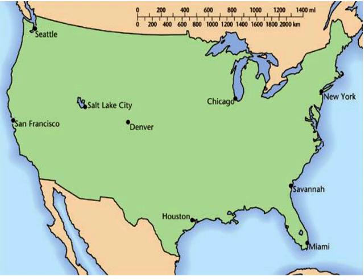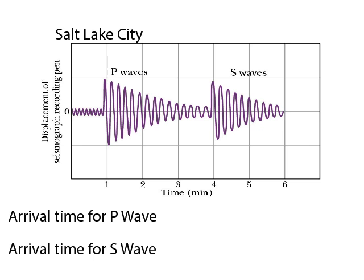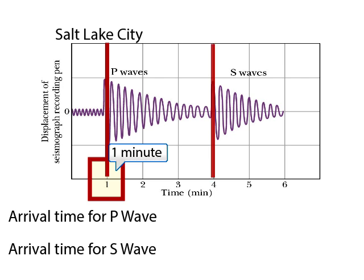Let's do an example of how to locate the epicenter for an earthquake that takes place in the United States. This is a seismograph from Salt Lake City. Here's where the P wave arrived — it was one minute. Here's where the S wave arrived — that was at four minutes.